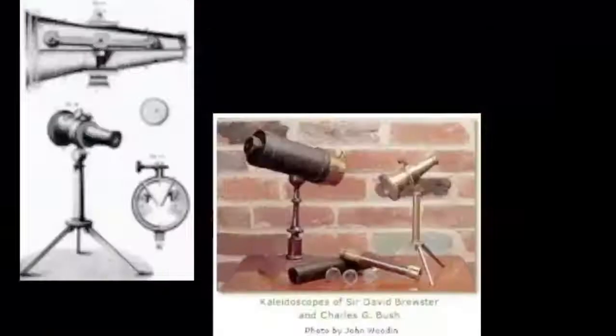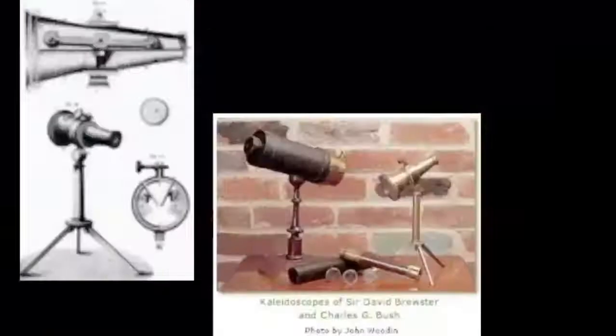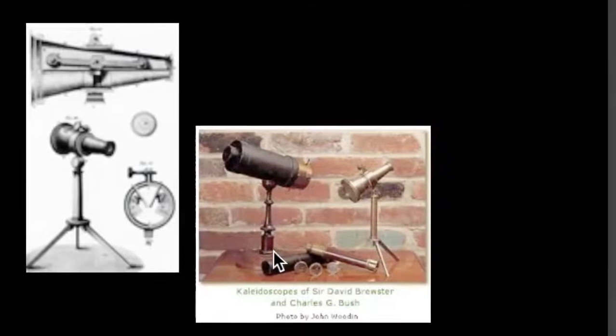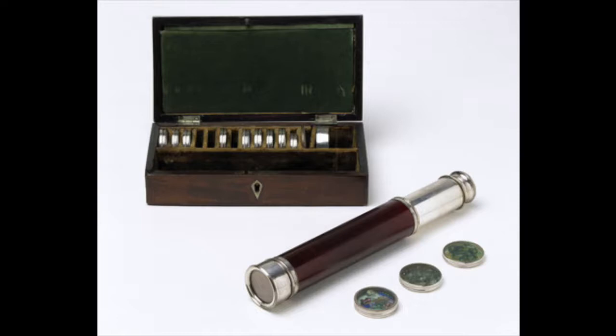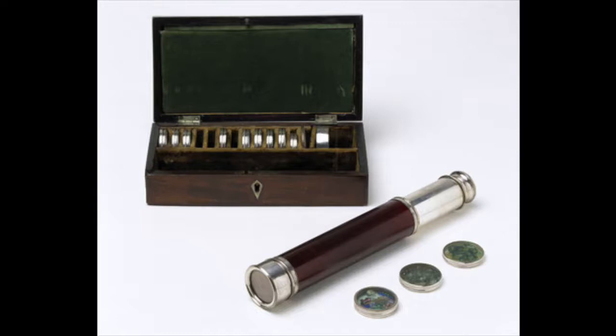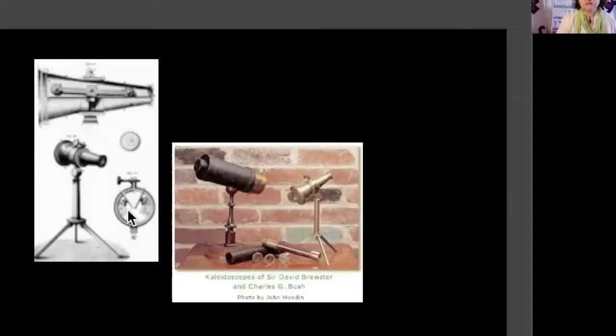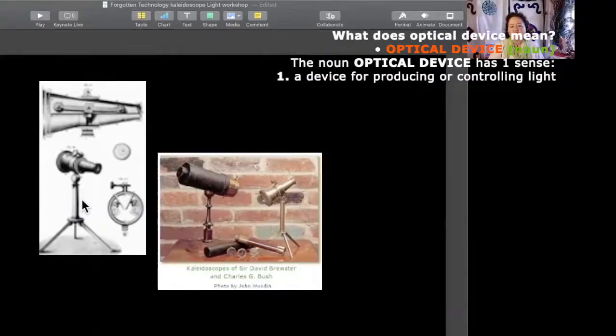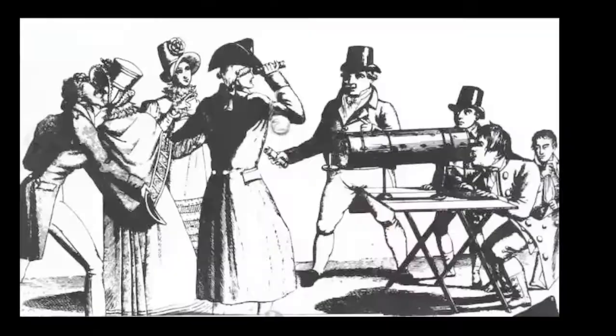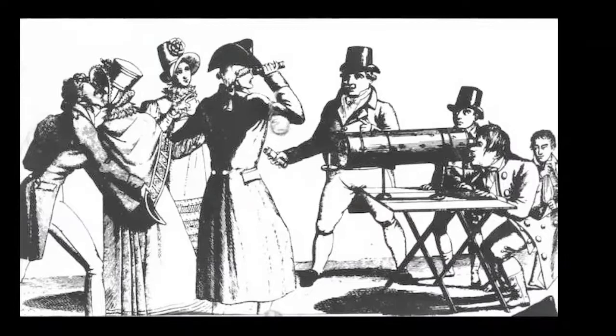Looking at an original Brewster kaleidoscope, you can see it's very precise. It had a proper little stand and a whole working mathematical apparatus where you could change the angle of the mirrors. He called it an optical device — that was his whole idea of not having it as a toy. There were all kinds of designs, and for over 60 years kaleidoscopes were sold, made, and created throughout the whole of Europe.